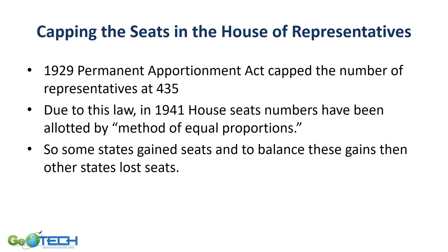In 1929, the federal government capped the number of representatives in the House at 435. Due to the method of equal proportions, representation is based on population. States with growing populations gained seats, while states with population losses saw diminished representation. For example, Pennsylvania has seen a loss of representatives over the past 20 years.